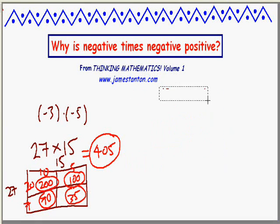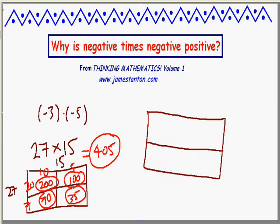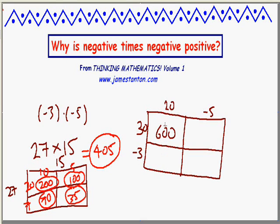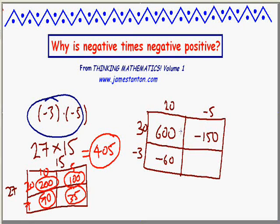Now let's be very strange and solve the same problem a third way. I'll draw a rectangle, but instead of doing 27 as 20 plus 7, let's again do it as 30 minus 3. And instead of doing 15 as 10 plus 5, let's do it as 20 and negative 5. Now I've got positive times positive here — no doubt that's 600. Negative 3 times 20: we've dealt with negative times positive, that's negative 60. Negative 5 and 30: we've dealt with that, that's negative 150. But this one — negative 3 times negative 5 — that is my mystery question.